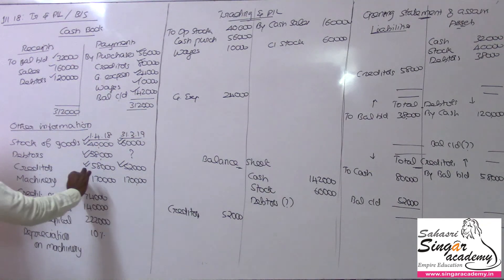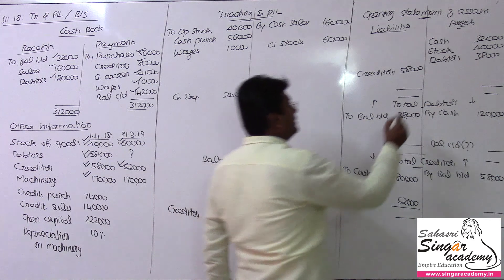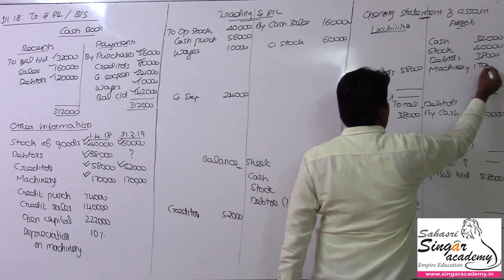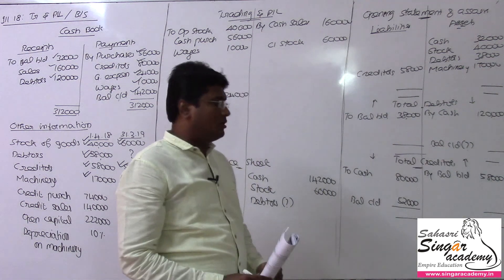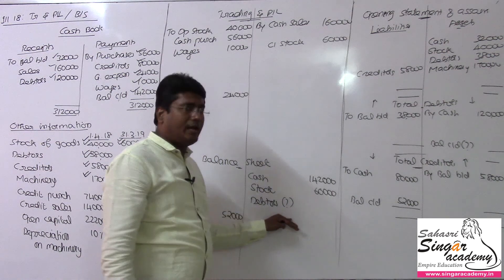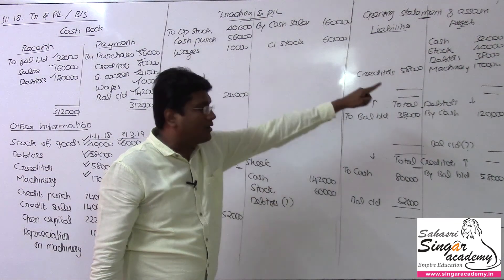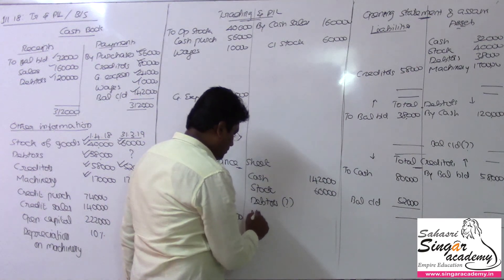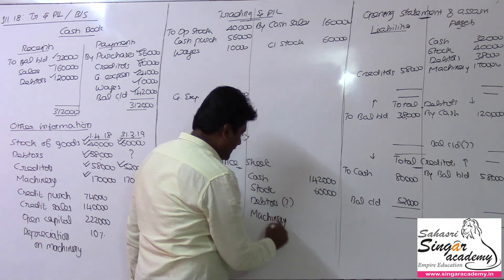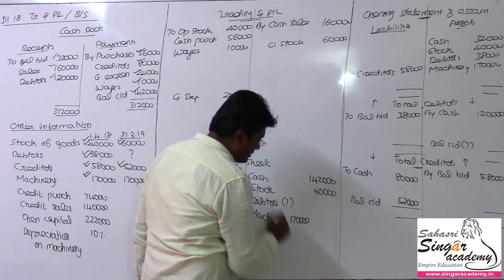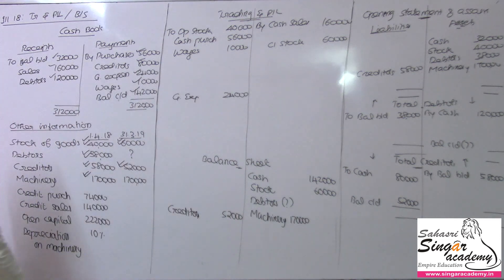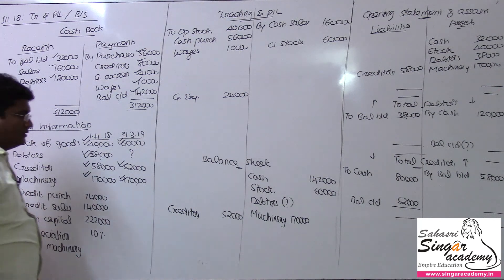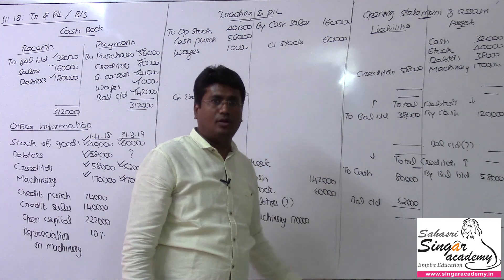Machinery opening balance is 1,70,000 rupees from the opening balance sheet. You can open the Machinery Account to record the opening and closing values. In this illustration, with opening and closing figures, we can work through it and understand the machinery account balance.